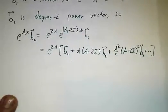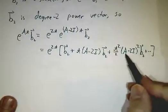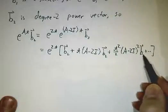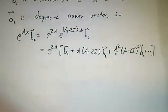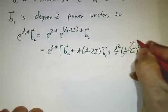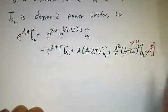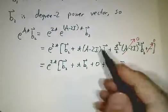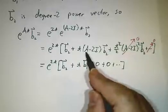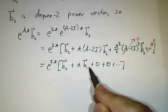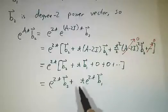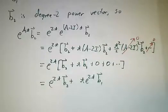But it's a power vector. Power vector means, and it's a power vector of degree 2, so (A-2I)² acting on b₂ is 0. This term is 0, the next term is 0, all the remaining terms are 0, and you're just left with, well, (A-2I)b₂ we said that was b₁, so you wind up with e^(2t)b₂ + t e^(2t) times b₁.